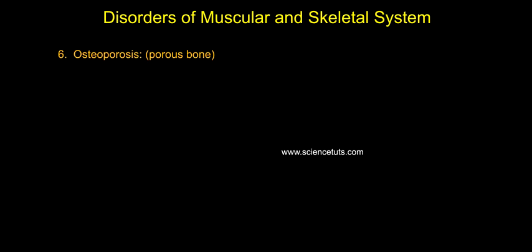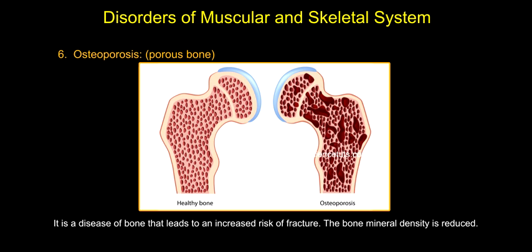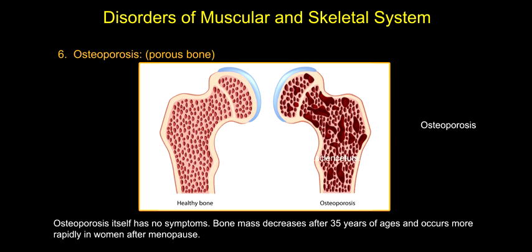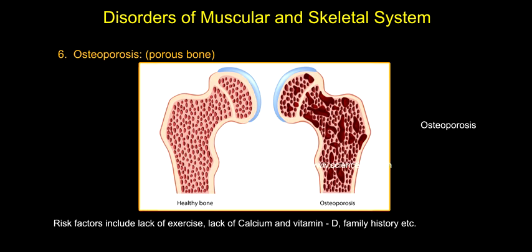Osteoporosis — porous bone. It is a disease of bone that leads to an increased risk of fracture. The bone mineral density is reduced. Osteoporosis itself has no symptoms. Bone mass decreases after 35 years of age and occurs more rapidly in women after menopause. Risk factors include lack of exercise, lack of calcium and vitamin D, family history, etc.